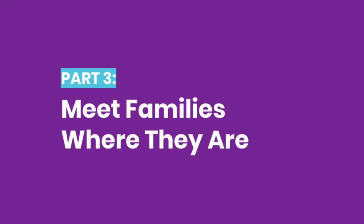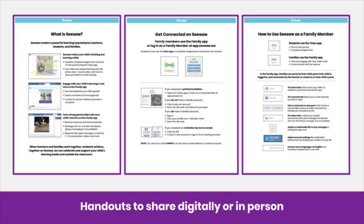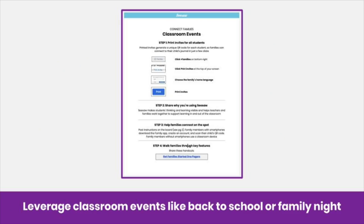Sometimes a printed or emailed invite doesn't work for all families — that's alright. Let's meet families where they are. The Seesaw Family Engagement Kit gives you everything you need to connect families. You'll find ready-to-use handouts that help families understand how Seesaw supports their child's learning, walk them through the steps to get connected, and give them a tour of how to use the Family app. Share these handouts digitally or print them out and share them in person.